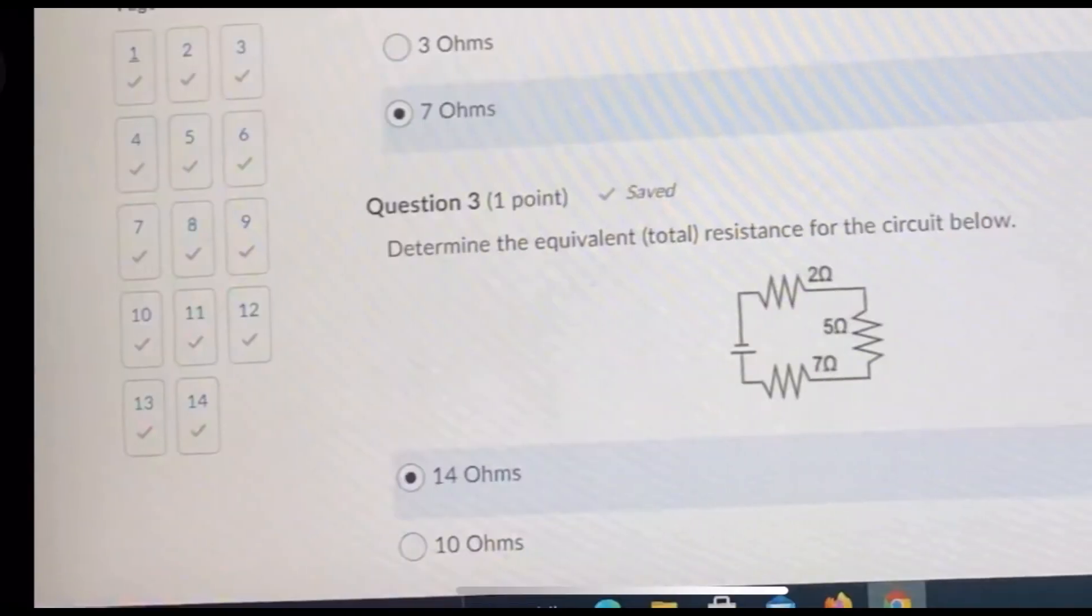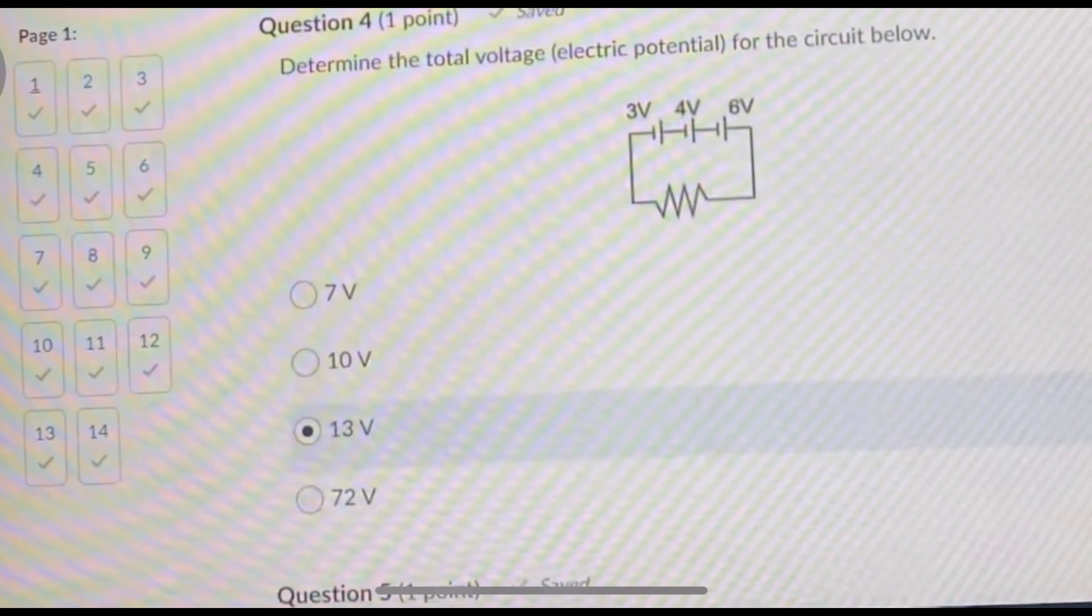Number three: determine the equivalent total resistance for the circuit below. In this case you have three different points for resistance. The first one is 2 ohms, then 5 ohms, then 7 ohms. If you have 2 plus 5 plus 7, you get 14 ohms. That's your answer.